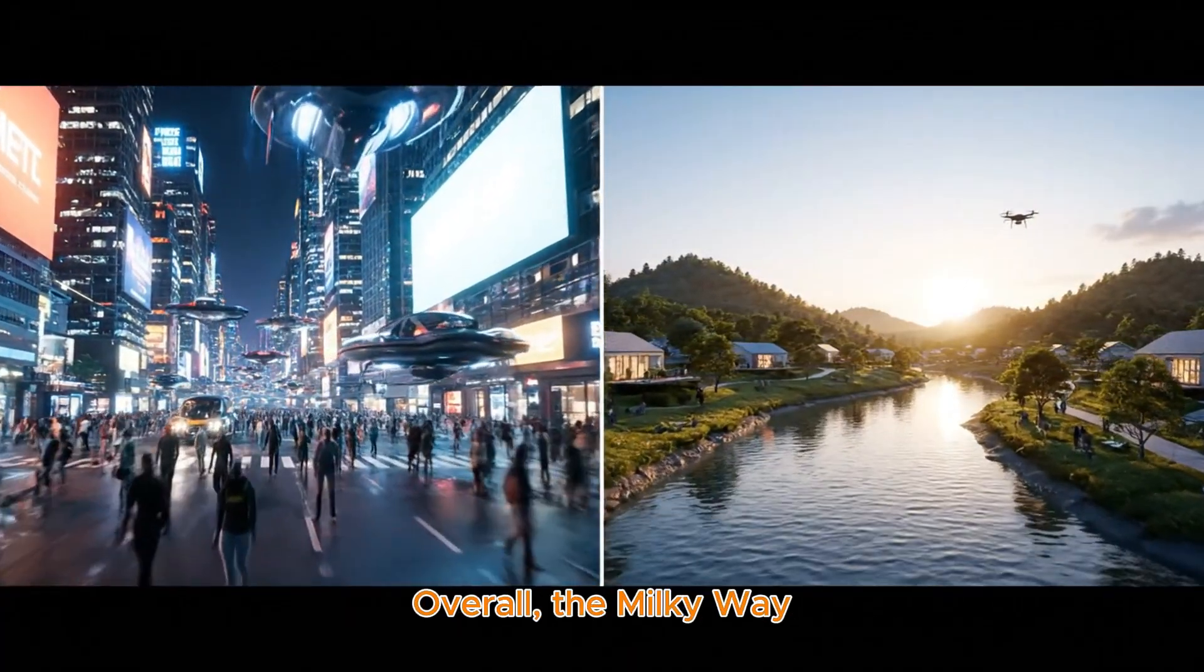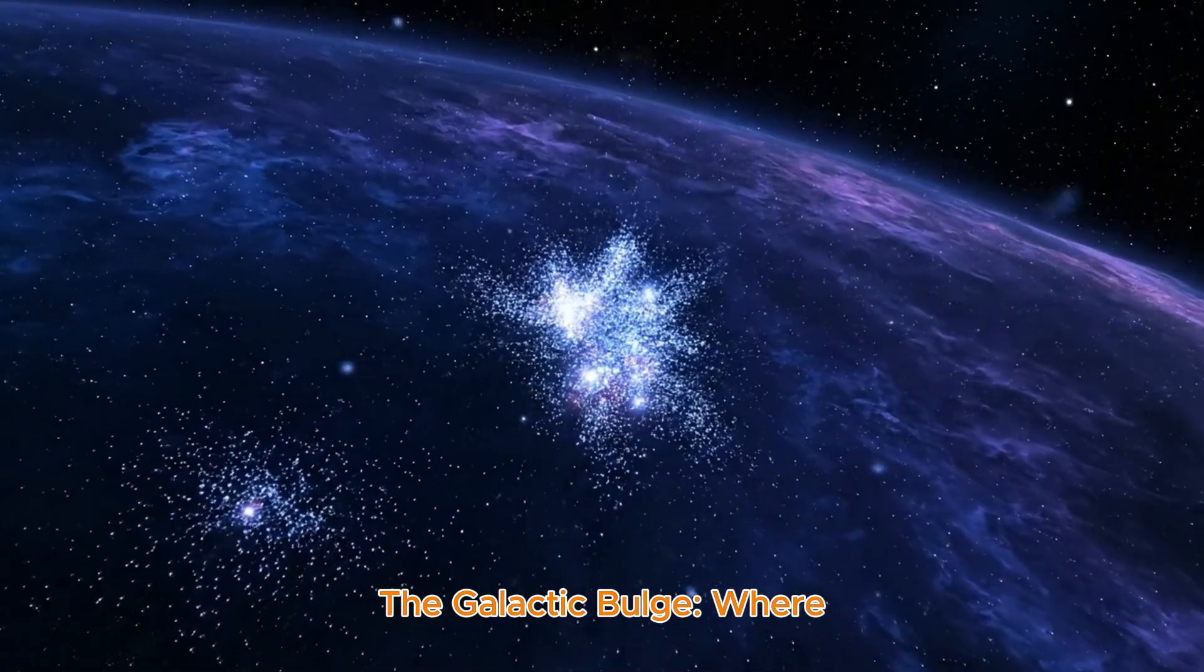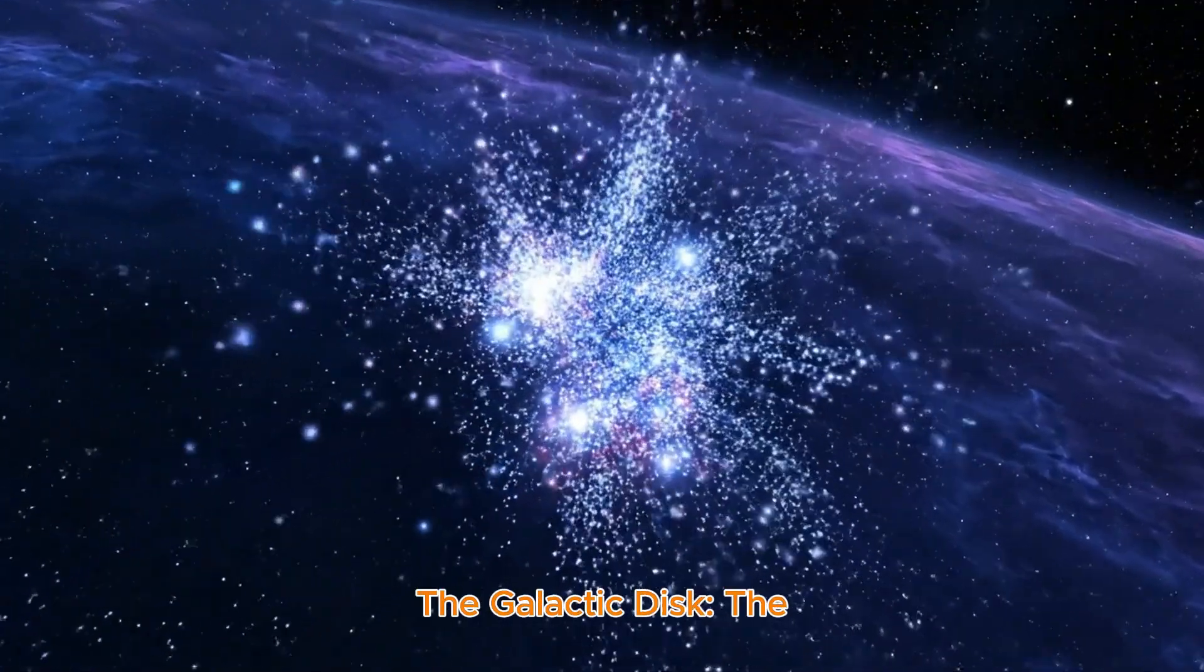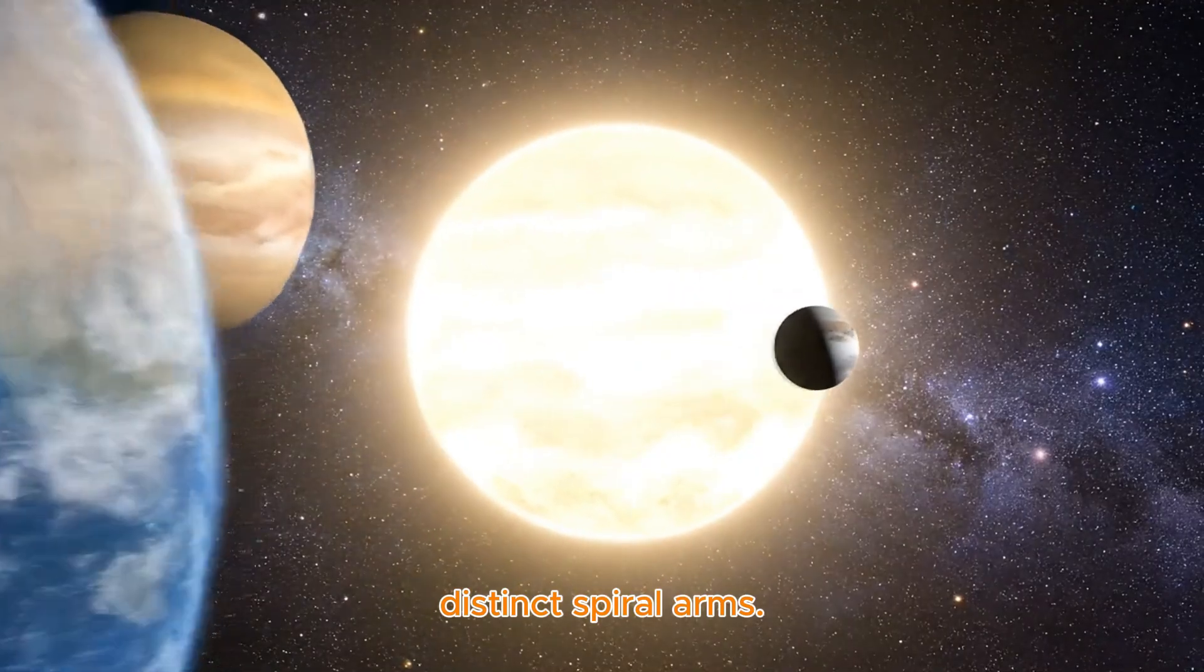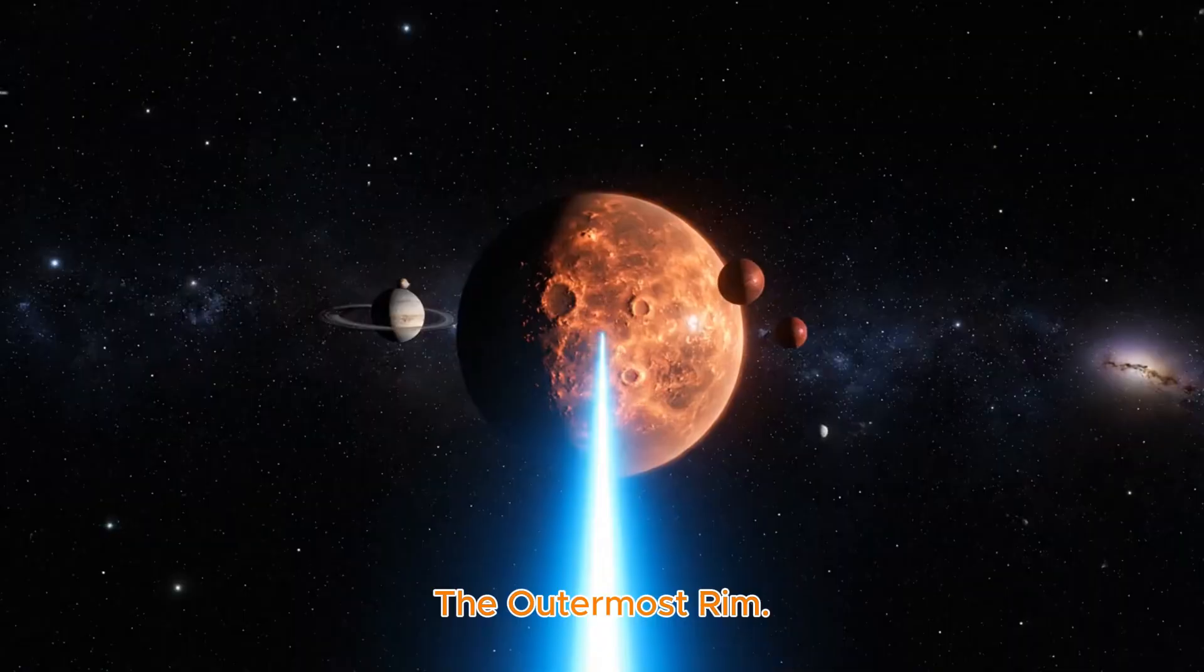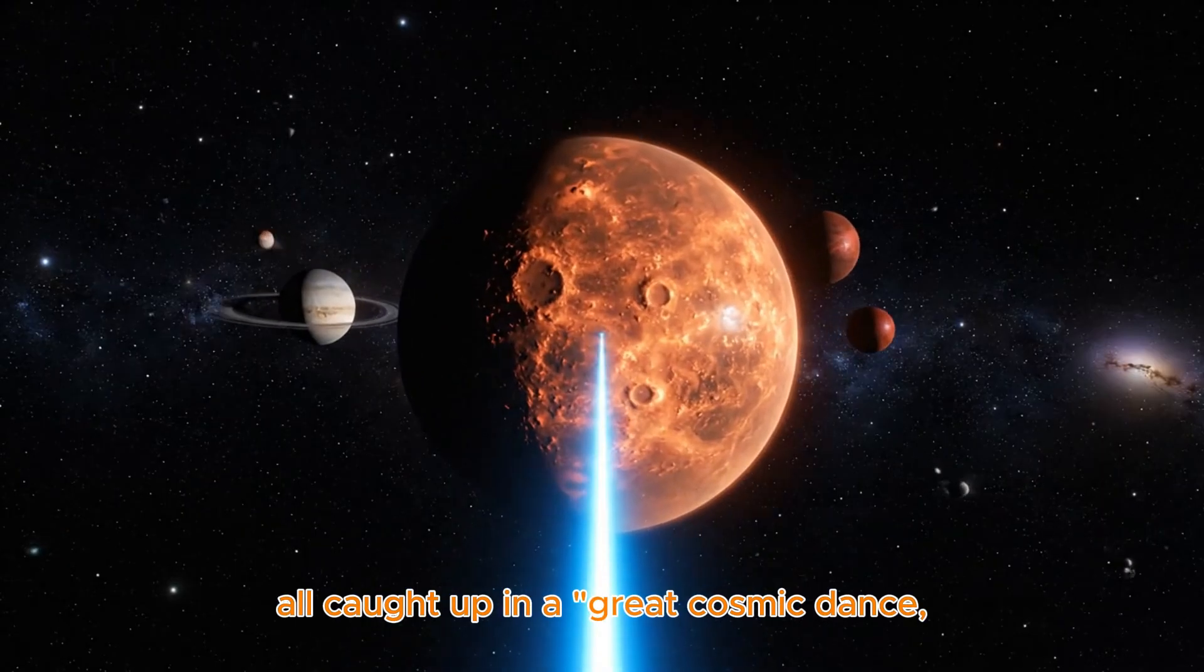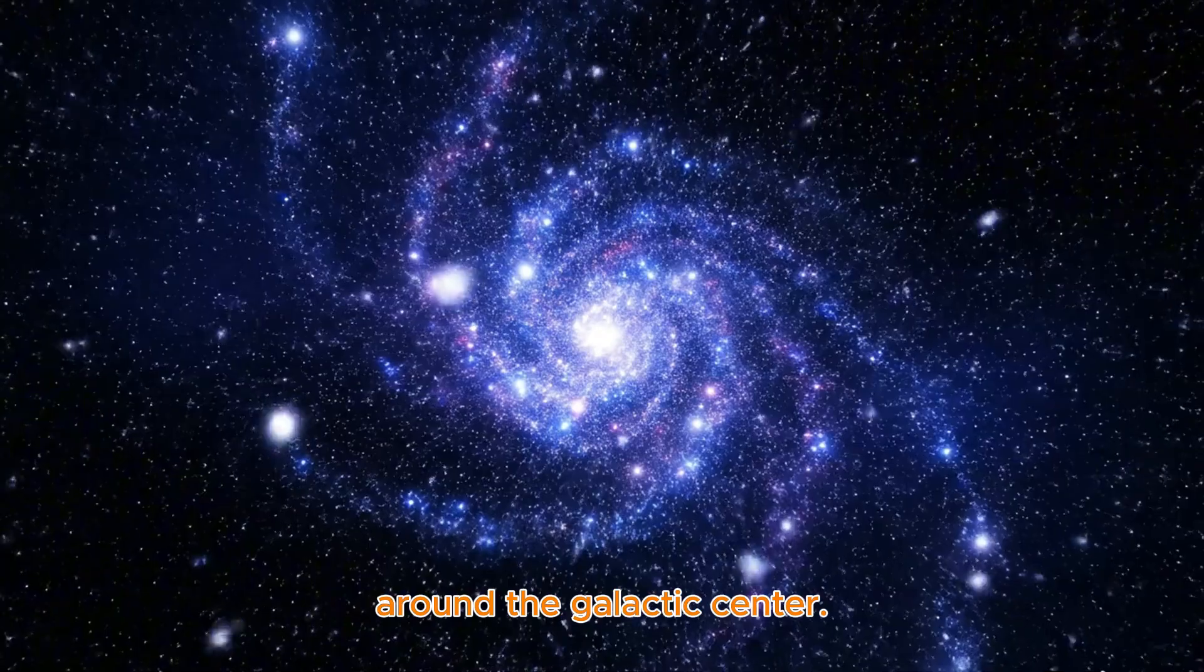Overall, the Milky Way is composed of four main components: the galactic bulge, where stars are densely concentrated and luminous; the galactic disk, the vast region with the distinct spiral arms; the stellar halo, the diffuse region surrounding the galaxy; and the outermost rim. Trillions of stars are spread across these regions, all caught up in a great cosmic dance, moving at immense velocities around the galactic center.